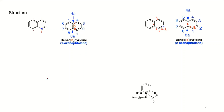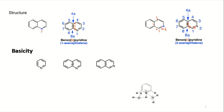Now here one important point: with respect to basicity — when it is donating the electron pair to the proton, we take the pKaH. The pKaH of pyridine is 5.2, quinoline is 4.9, and isoquinoline is 5.5. Though they are very close, there are distinct differences. Isoquinoline has the maximum value and quinoline has the minimum.